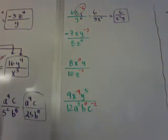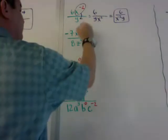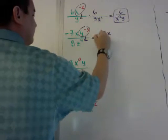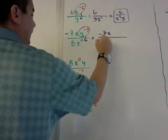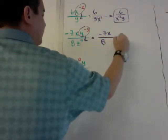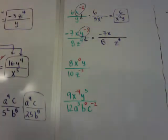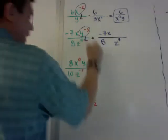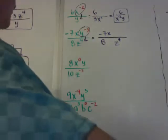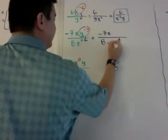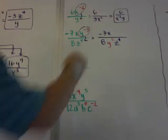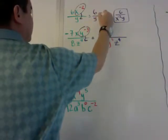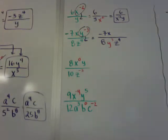On the next one, I circle only the y to the negative 3. I leave the negative 7x on the top and 8z to the 4th on the bottom. The only thing I move down is y cubed. I leave a space alphabetically since it will move down, and it becomes y to the third power on the bottom. So the answer is negative 7x over 8y cubed z to the 4th.